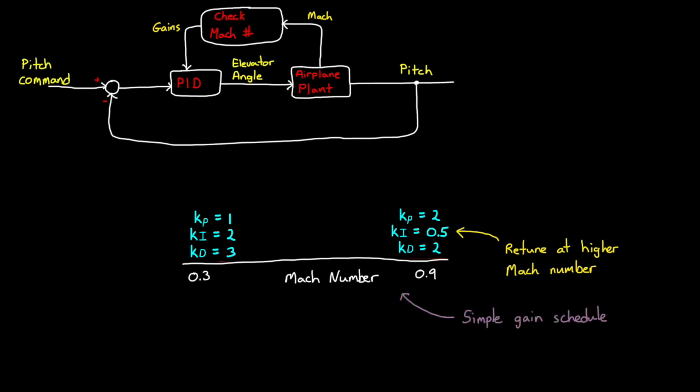We've selected gain based on the scheduling variable. In our case, it's Mach number. Once we've selected the gains that we want, we need to be able to update the controller with these new gains. That's what the arrow coming in from the top of the PID controller is intended to represent. Within Simulink, there are a number of controller blocks that allow you to define the gain as an external input for this very reason. I've left a link to more information on this in the description below if you want to check it out and practice developing your own gain scheduler.